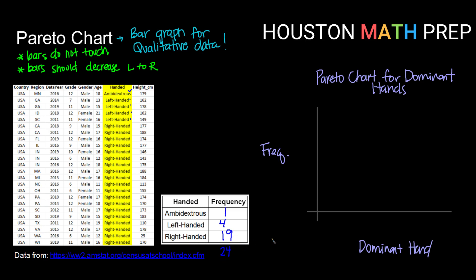The category with the highest frequency is right-handed, so that goes first. Next most frequent is left-handed, and then my lowest category was ambidextrous. Now I've got my categories labeled. I want to choose a vertical numerical scale that will allow me to show frequencies of 1, 4, and 19. So maybe I'll go up to 20, and I could count by 2s or 5s — I'm going to go ahead and do 5s.